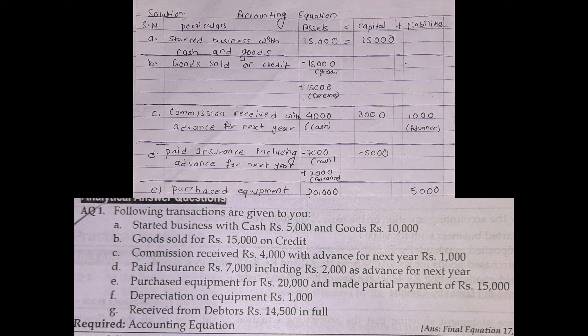Commission received Rs. 4,000 with advance for next year Rs. 1,000. So commission received — one entry for commission.